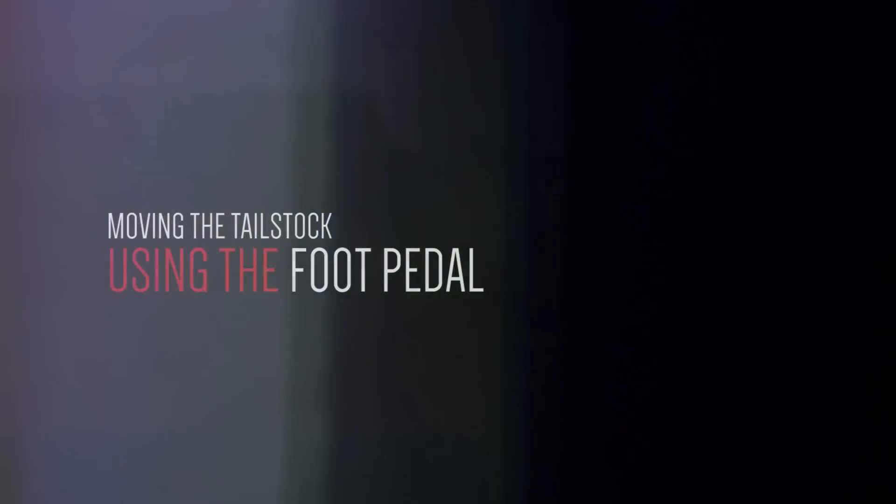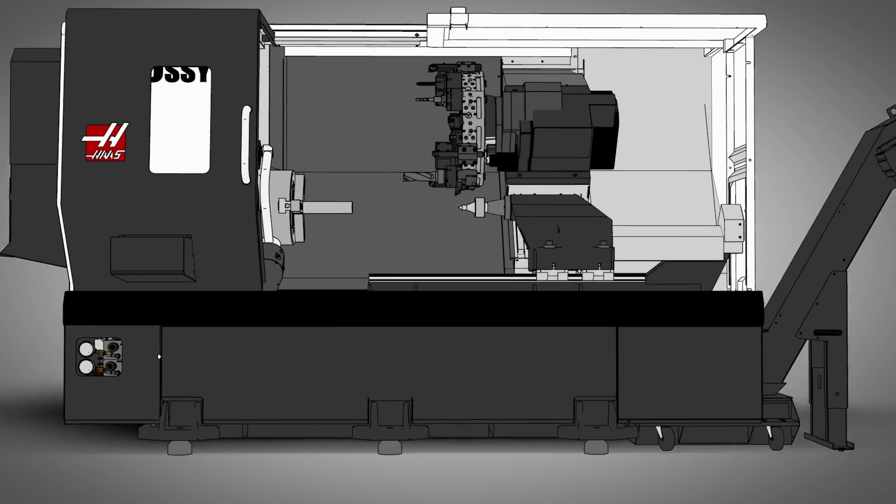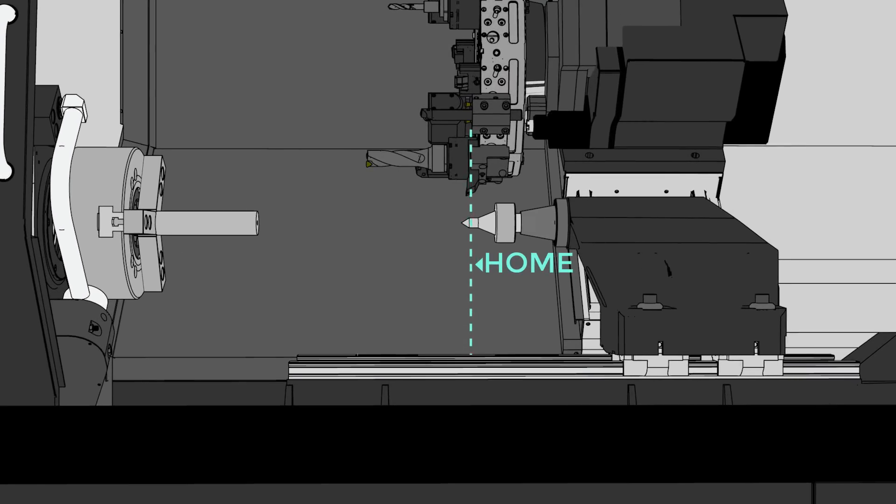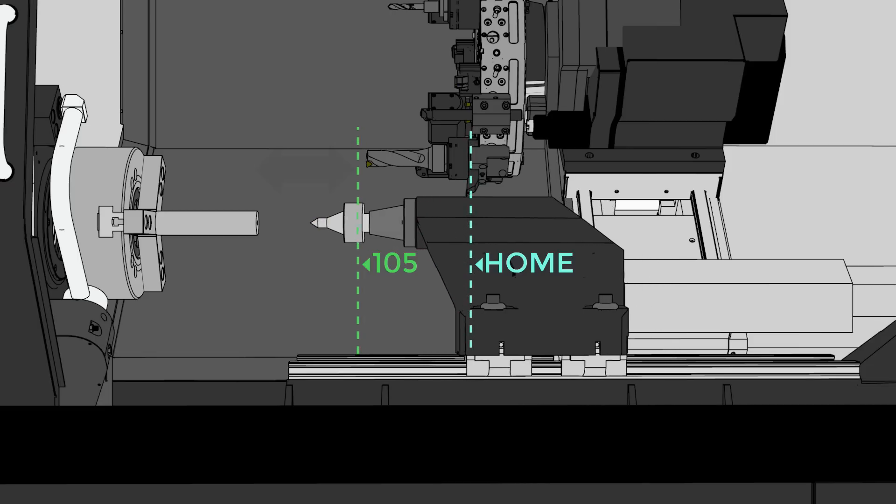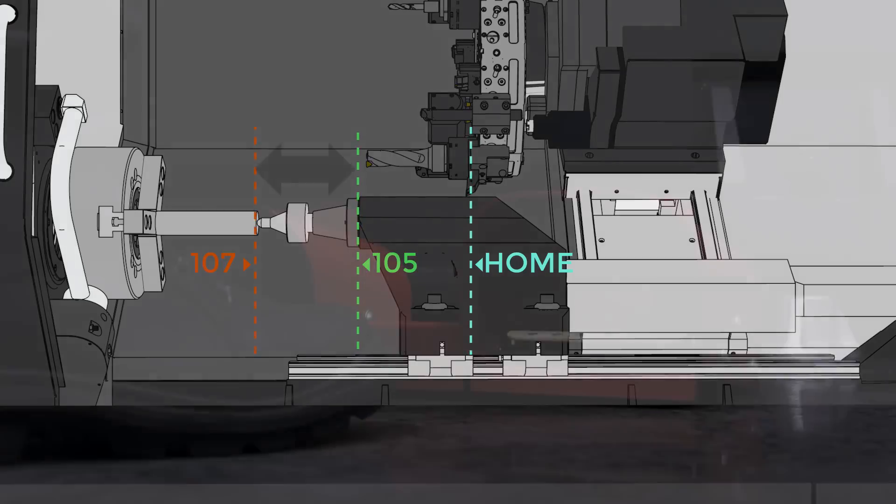Still another way to initiate a tailstock move is to use the foot pedal. Whether it's commanded from a program or by the foot pedal, when the tailstock moves forward from home position, it moves to what we call the retracted setting 105 position. From here, it will move back and forth between the 105 retracted position and the 107 hold position as you clamp and unclamp your parts.